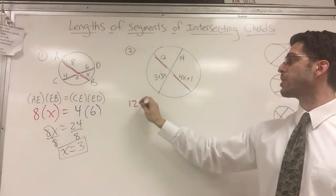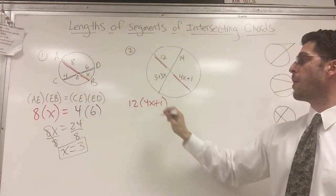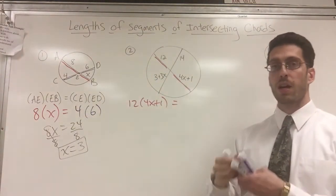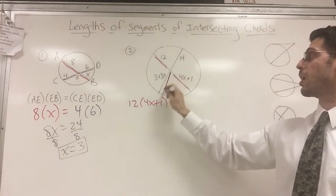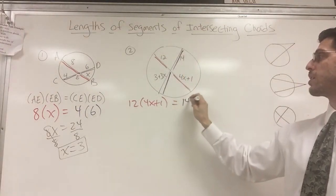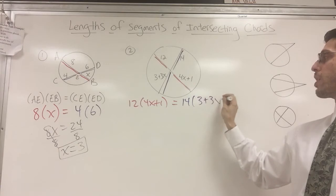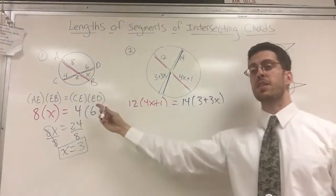So here I got 12 times 4X plus 1 equals, and I'll go the other way here, 14 times 3 plus 3X. So same exact formula.